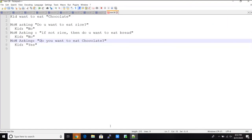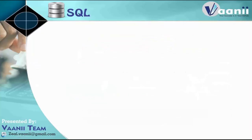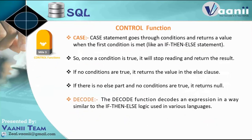When we have conditions like greater than, less than, greater than or equal to, and we have multiple conditions, in that case we generally go for CASE. Otherwise we go for DECODE. DECODE is kind of an equality condition — if department ID equals 10, then something; if department ID equals 20, then some value. For these kinds of equality conditions, we prefer DECODE. For greater than, less than, less than or equal to, greater than or equal to, and conditions based on multiple columns, we generally prefer CASE.